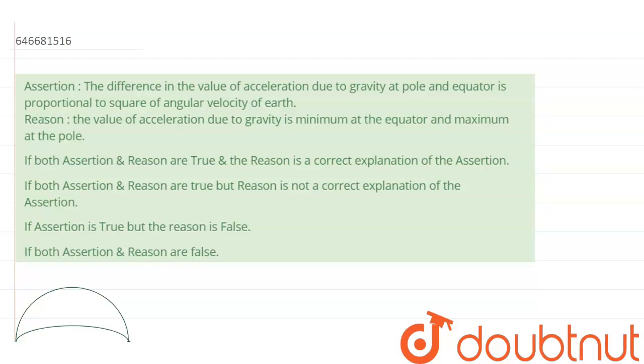Assertion: The difference in the value of acceleration due to gravity at pole and equator is proportional to square of angular velocity of earth.